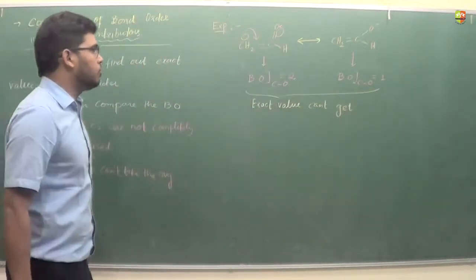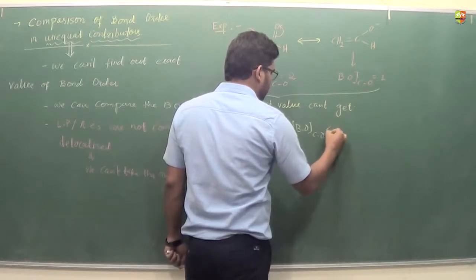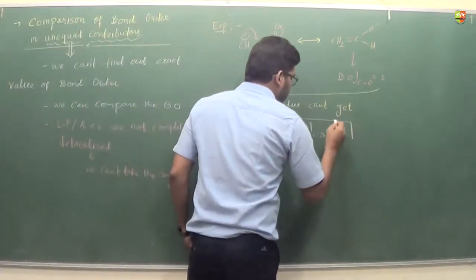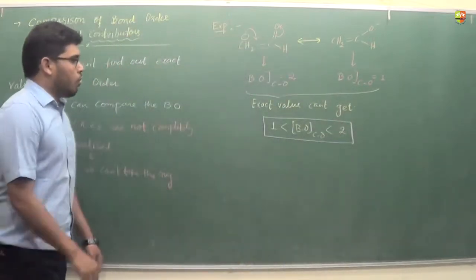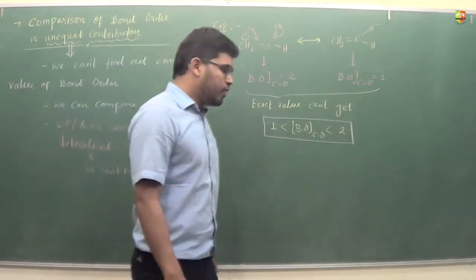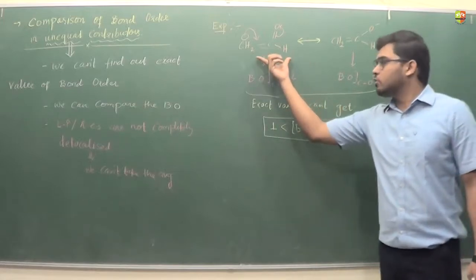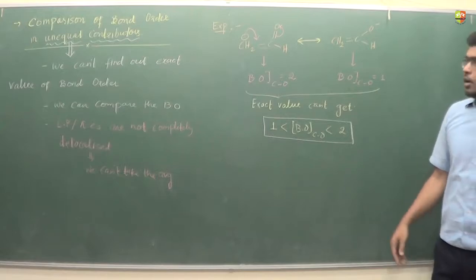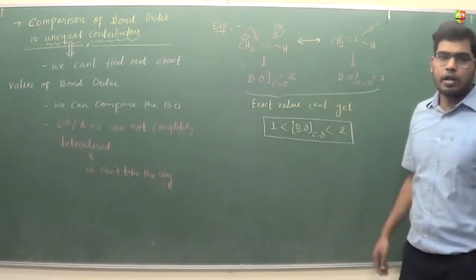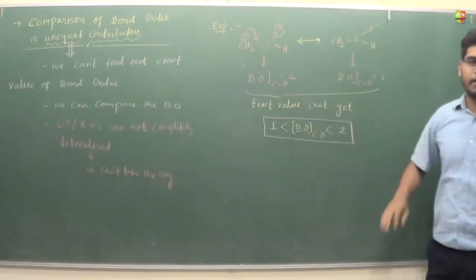Since the electrons are not completely delocalized, we cannot find the exact value. But we can say the bond order of the carbon-oxygen bond is in this range: greater than one but less than two. Now if I ask whether the bond order is closer to one or two, it depends on which resonating structure is more stable.